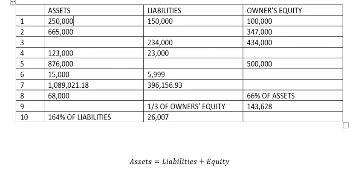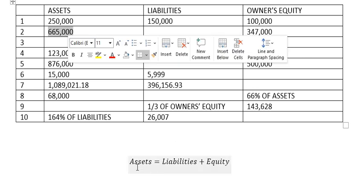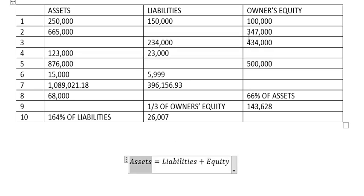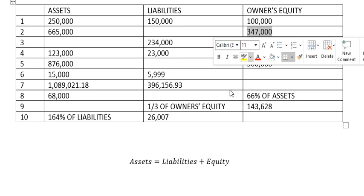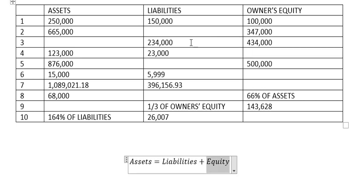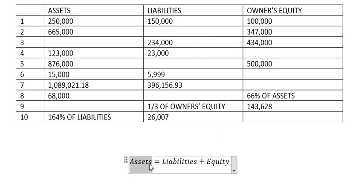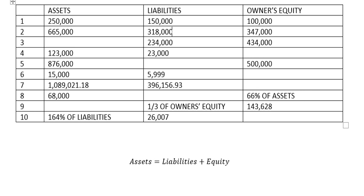Now we have the second problem. We have Assets and Equity, and we want to find Liability. So we put Assets minus Equity — we move this one to the left — and we got the final answer, which is about three hundred eighteen thousand.